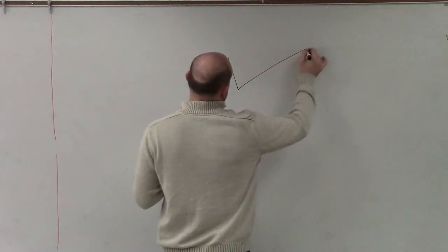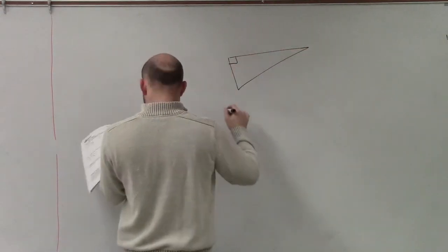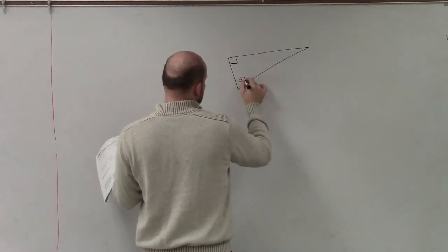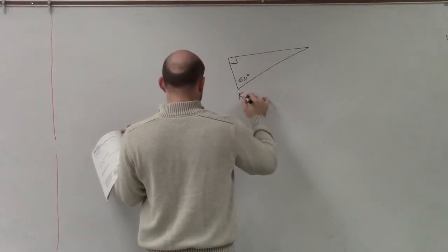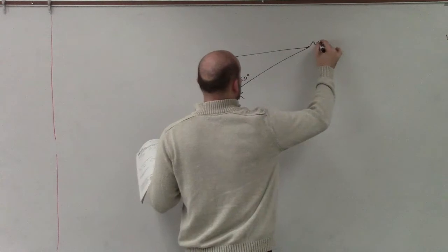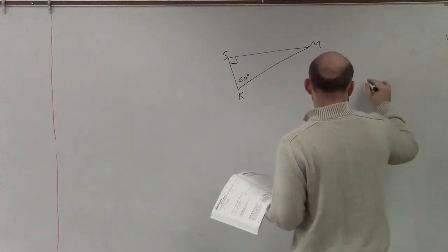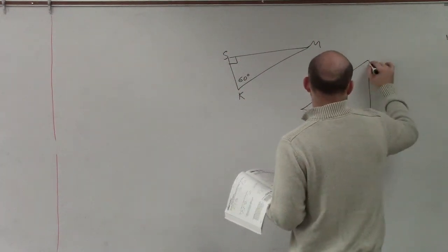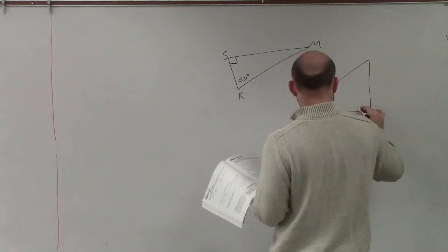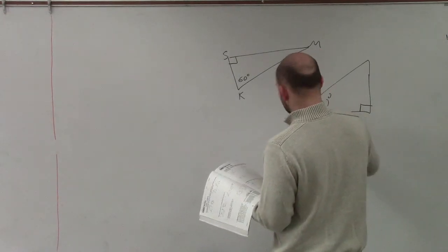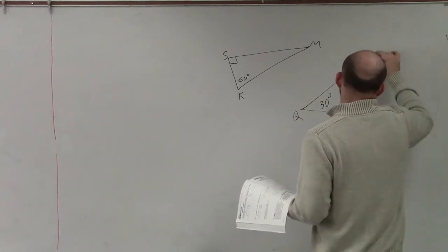So what we have here is a right triangle that has 60 degrees. So K, S, M. And then over here, we have a triangle that has 30 degrees and a right angle. So Q, R, T.